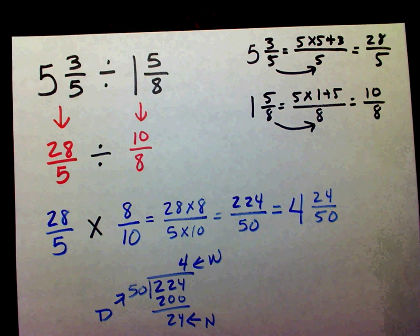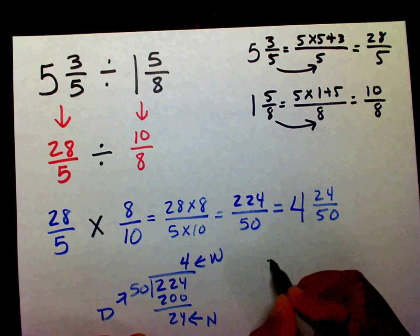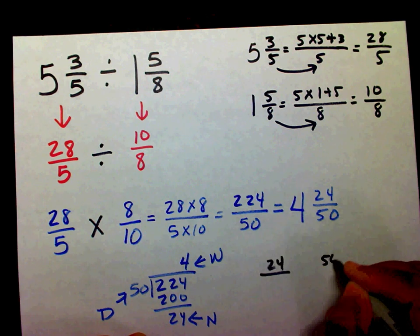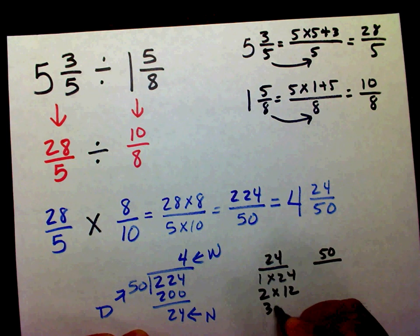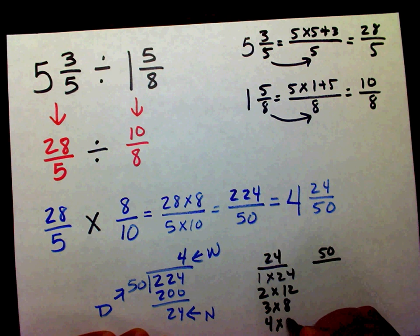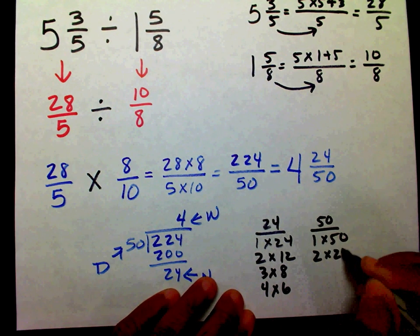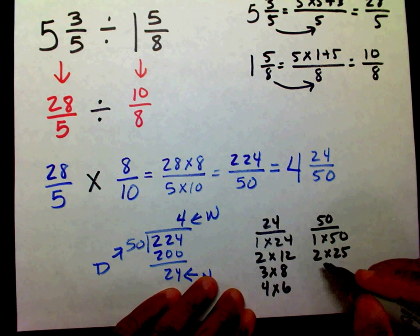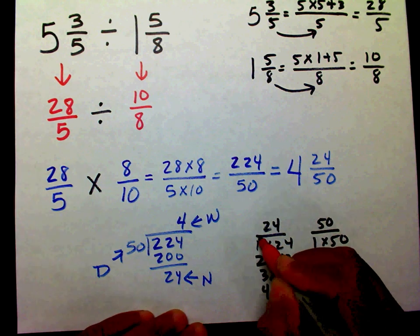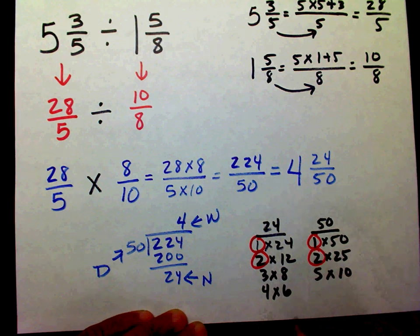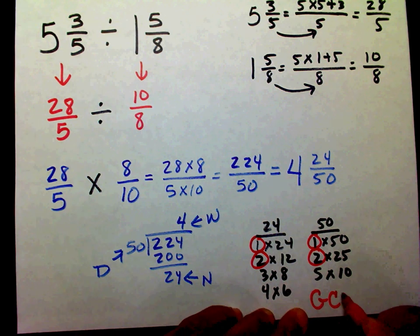Now I need to see if twenty-four fifty-ths is in its lowest terms. I'm going to find the factors of twenty-four and the factors of fifty. Factors of twenty-four: one times twenty-four, two times twelve, three times eight, four times six. Factors of fifty: one times fifty, two times twenty-five, five times ten. Circling common factors — they share one and two, so my greatest common factor is two.